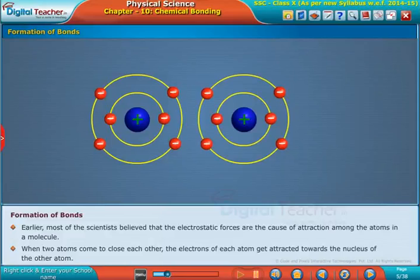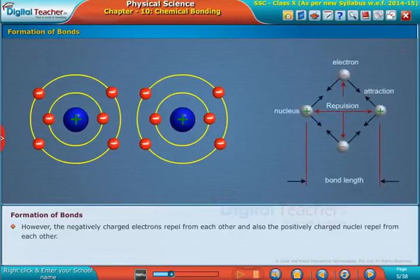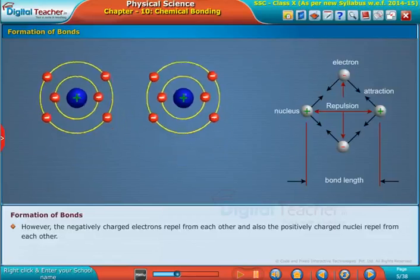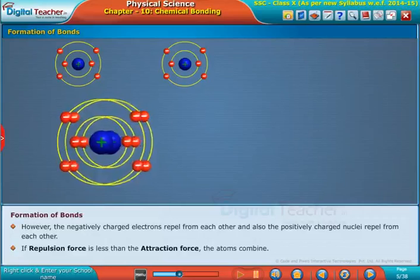However, the negatively charged electrons repel from each other, and also the positively charged nuclei repel from each other. If repulsion force is less than the attraction force, the atoms combine.